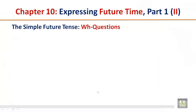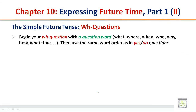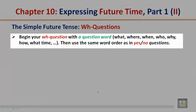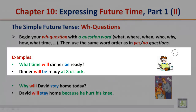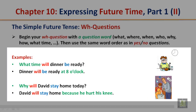The simple future tense: WH questions. Begin your WH question with a question word — what, where, when, who, why, how, what time — then use the same word order as in yes or no questions. Example: What time will dinner be ready? Dinner will be ready at 8 o'clock.